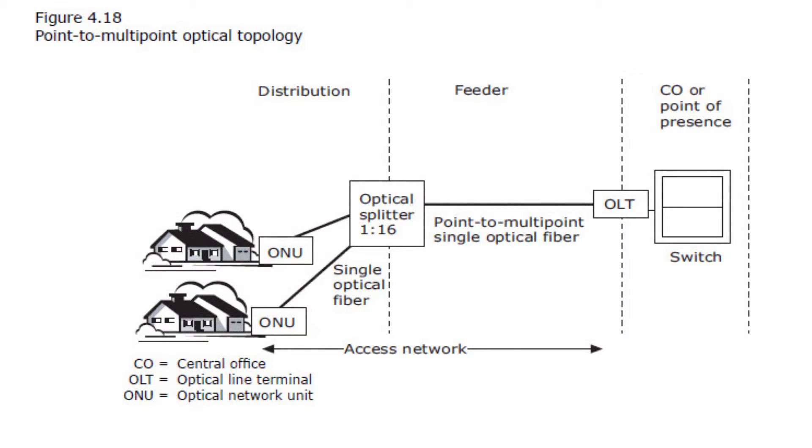Figure 4.18 in your TDMM illustrates an Ethernet passive optical network, or EPON, topology. The optical distribution network consists of the optical fiber distribution plant and the passive optical splitter. The EPON has no active Ethernet or optical equipment in the distribution or access network in the neighborhood.